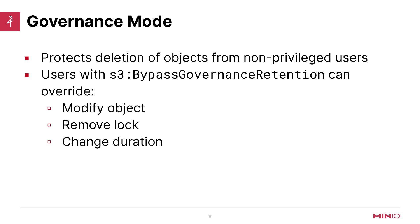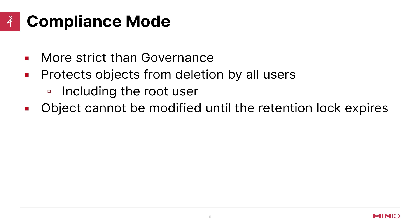The root user — the admin user that you stand up when you first start up MinIO — can always bypass governance retention because it has that permission set. In fact, all of the different built-in users available, unless we're talking about the read-only or write-only users, have bypass governance retention available to them. So that is something you will need to set specifically. The other mode available is compliance mode. This is much more strict than governance because it protects objects from all users, including the root user. The object cannot be modified until the retention lock expires.